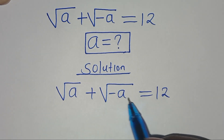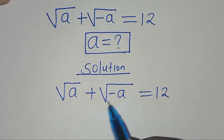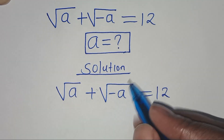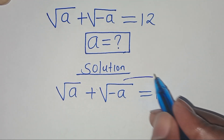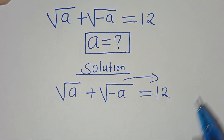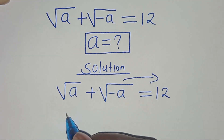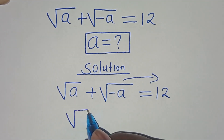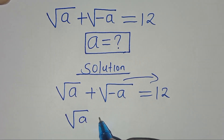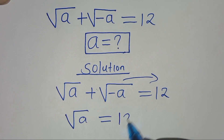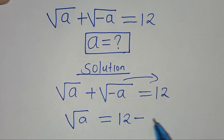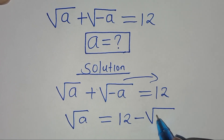The first thing to do here is to take square root of minus a to the right-hand side, so that we have square root of a equal to 12 minus square root of minus a.